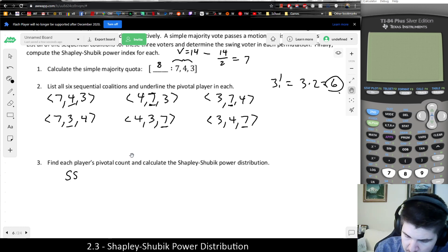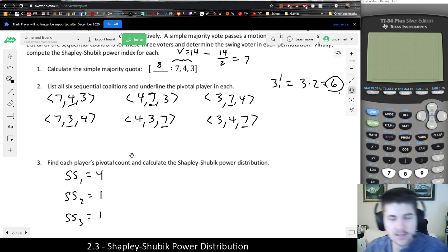So player 1 was underlined, and that's the 7, was underlined 4 times. Player 2 had 4 votes, was underlined once. Player 3 had 3 votes, was underlined once. So each count, it's 4, 1, 1, is the power indices for each player.